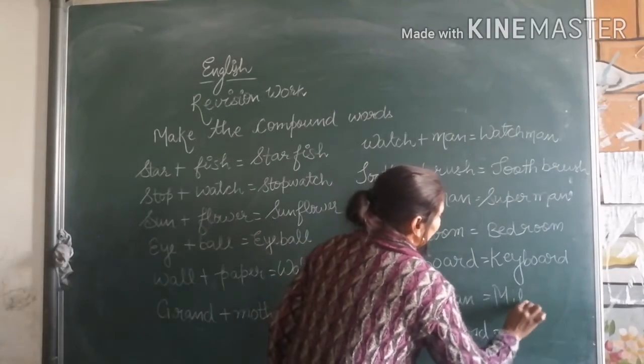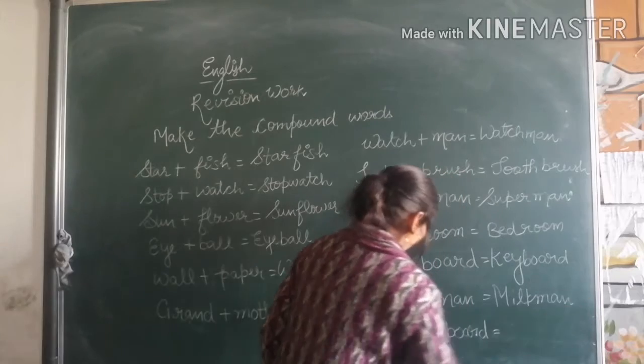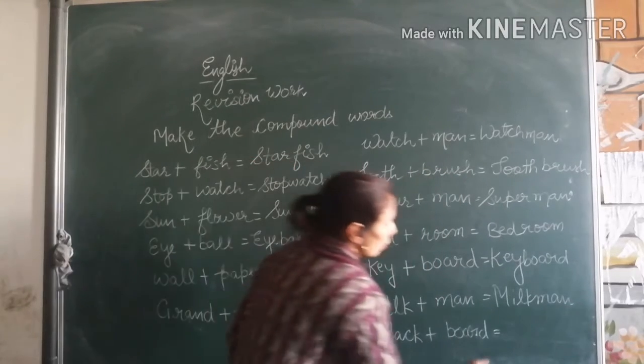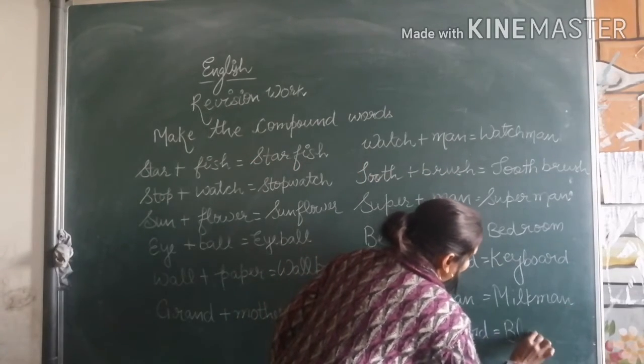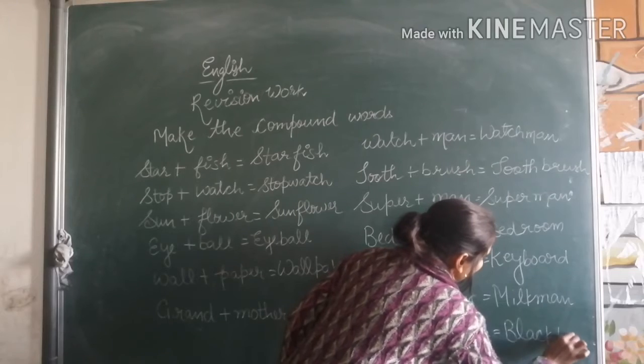We will write here: milkman. Black plus board — you will write a new word: blackboard.